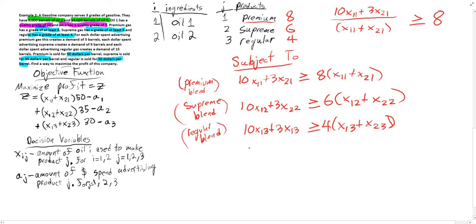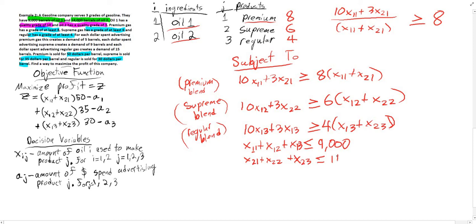We also need to add up our total amount of each oil used, since there is a restriction on the starting supply. All of oil 1 used across all products has to be less than or equal to 9,000, and all of oil 2 has to be less than or equal to 14,000. This is our inventory starting constraint.